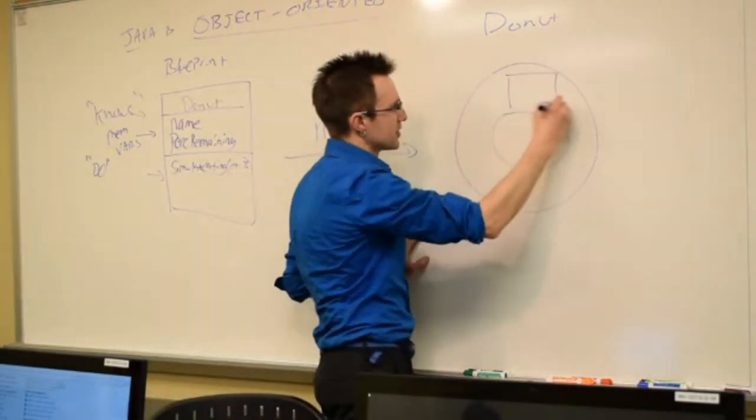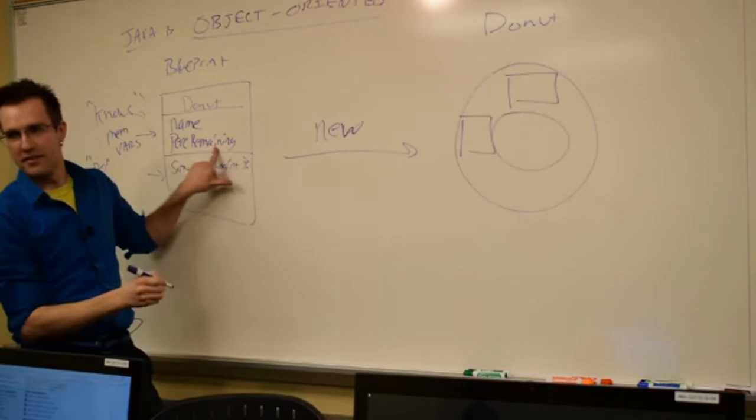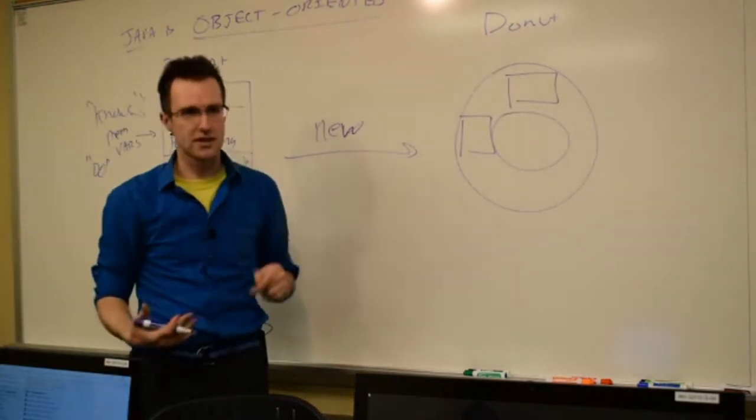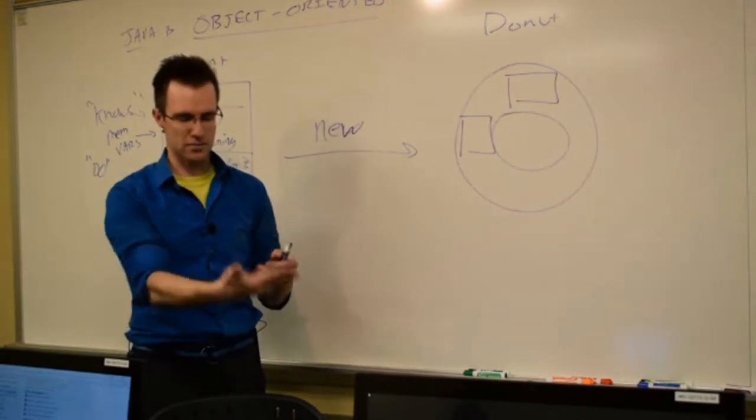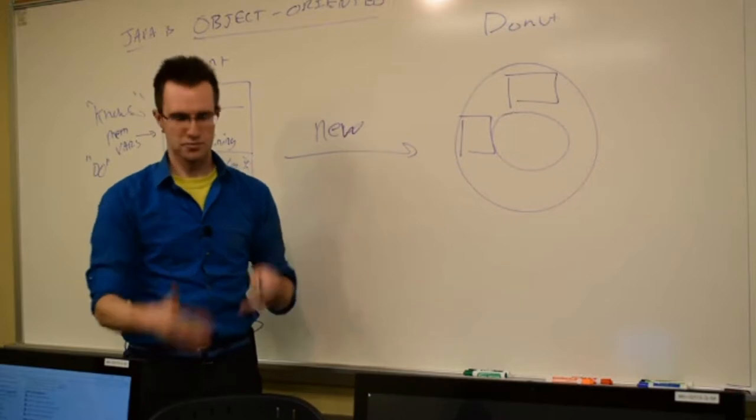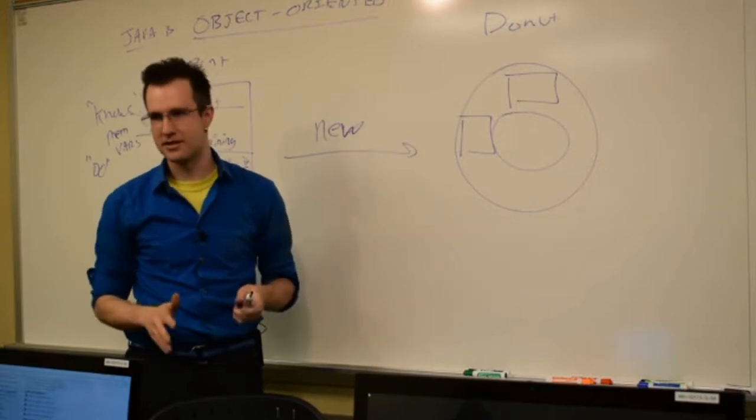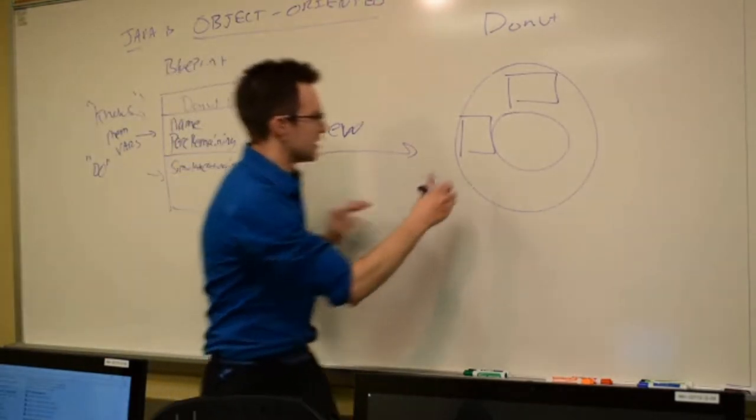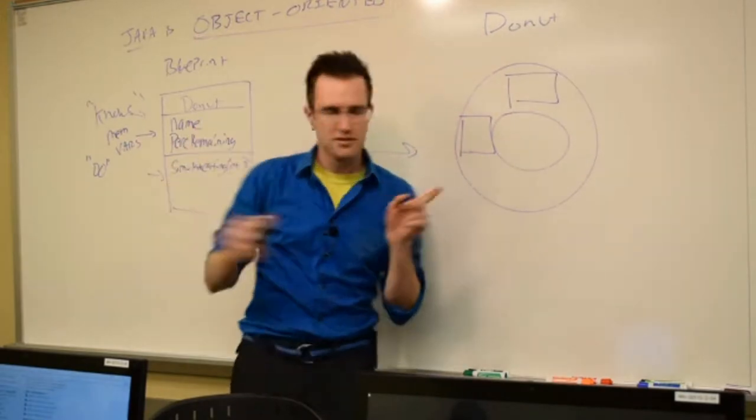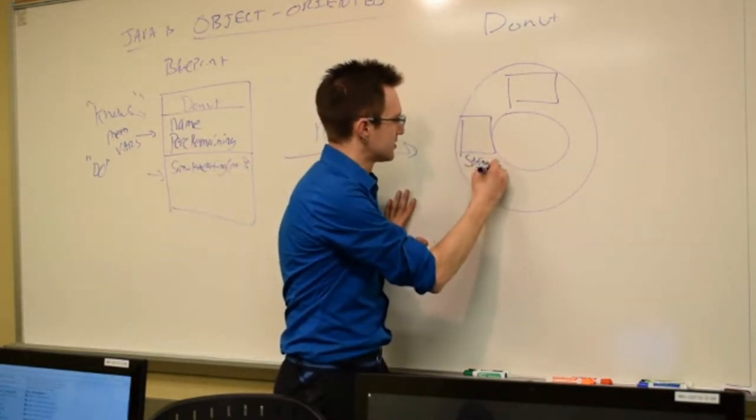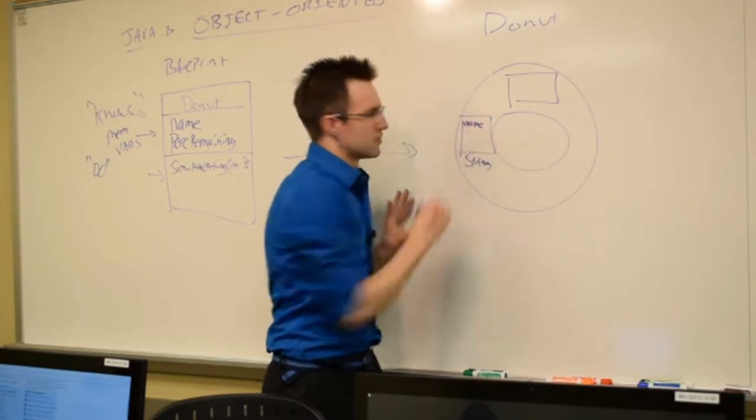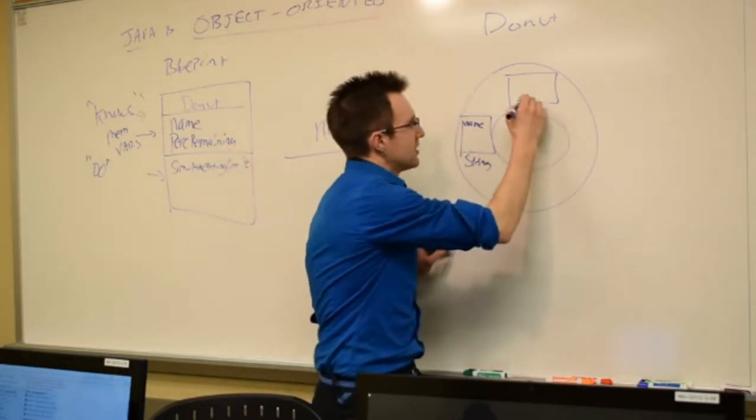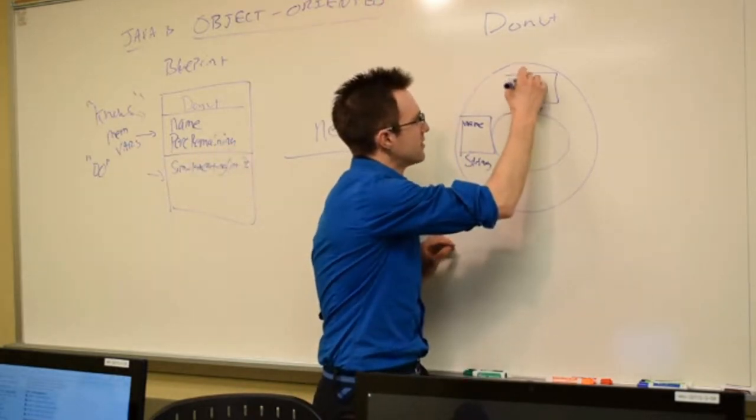And on that donut object, put what? Go through the blueprint. Just like someone that built a Chipotle, the architect makes the plans. They give it to the builders and they say, okay, we need a parking lot. Build a parking lot. We need a kitchen. Build a kitchen. We need a line for people to wait in to get their food. That's what's going on here. Every donut object needs a what type variable? What would we store name in? Strings. What else? What's the other number variable? It's an int. It's an int. And it's called? First remaining. Yeah. First remaining.